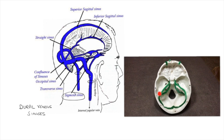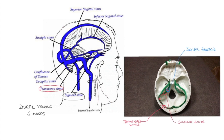The green pipe cleaners represent some of the dural venous sinuses within the cranial cavity. The structure running transversely across the floor of the posterior cranial fossa is the transverse sinus. As the transverse sinus runs around the posterior cranial fossa, it will take a turn and run inferiorly towards the jugular foramen as the sigmoid sinus. These images also help to demonstrate the connections between the cavernous sinus and these other dural venous sinuses.